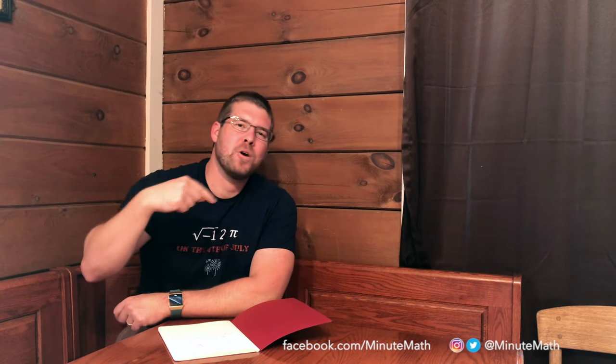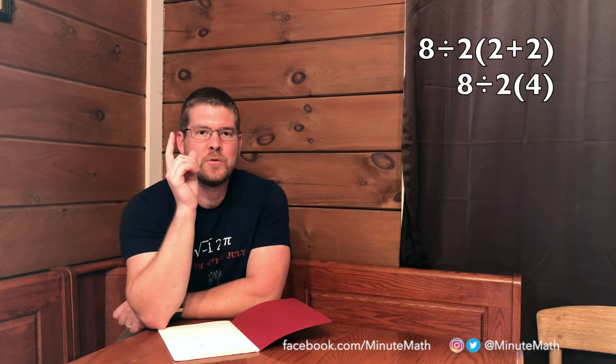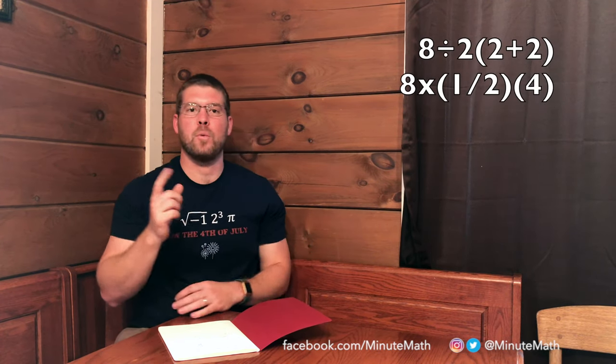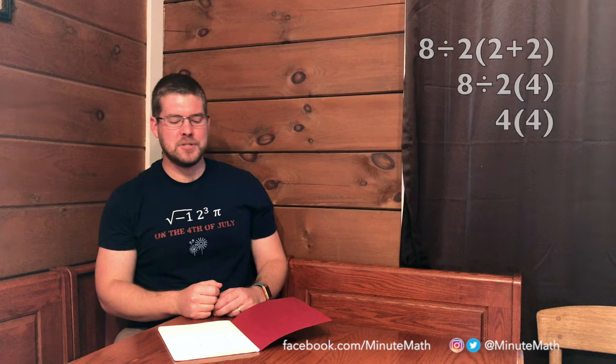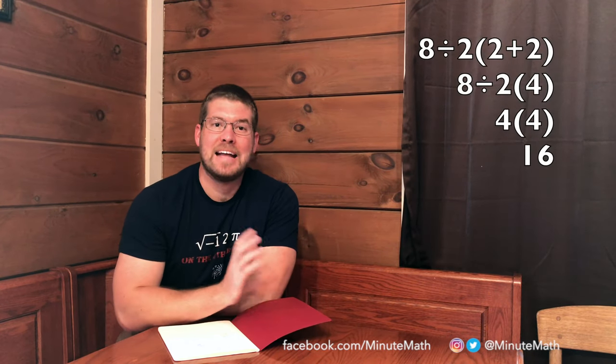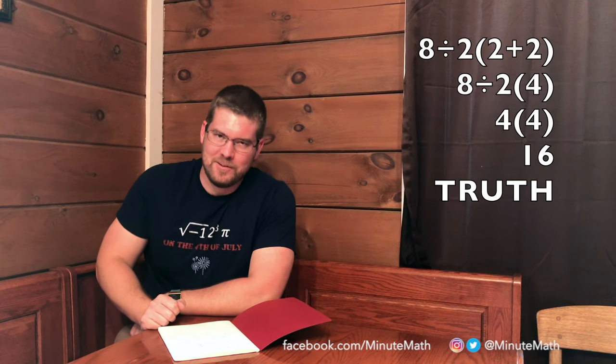First step, where you need to go now, is eight divided by two happens first. Because, really, that's eight times one half. Eight divided by two is four. Four times four is sixteen. And sixteen is your true final answer.